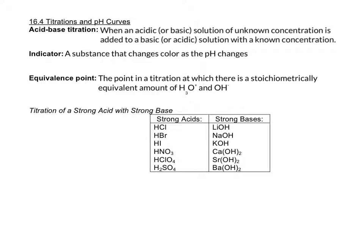The first one we're going to talk about is titration of a strong acid with a strong base. Just as a reminder, these are the strong acids and the strong bases. You need to know them because the AP test expects that you know which ones are strong and which ones are weak.